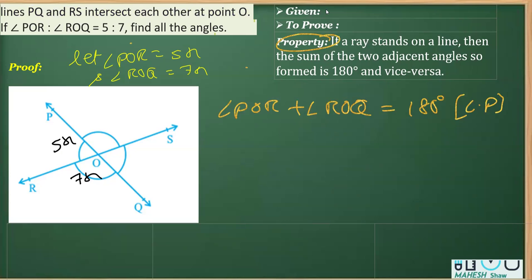Now I can replace this POR with 5x and ROQ with 7x, that is equal to 180 degrees. This is 12x equals 180 degrees, or transposing will get x equals 180 over 12. That should be 15 degrees.